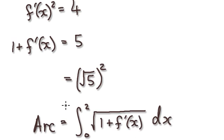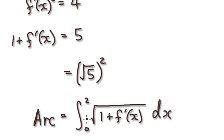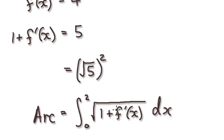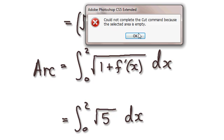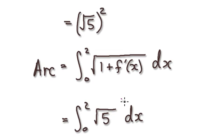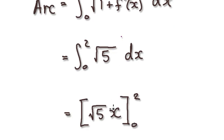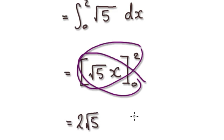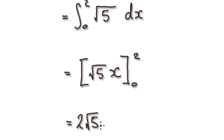Now put it into the arc length formula. Plugging in takes us to this expression. We then evaluate it — integrating gives this, and then it's this value take away this value, which is simply 2√5. So the arc length, even though it's a straight line, is 2√5.